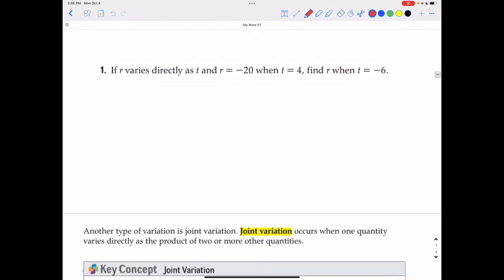Here's another example. If R varies directly as T and R is negative 20 when T is 4, find R when T is negative 6. I'm going to put the R over the T. You can put T over R if you would like. It doesn't matter because you're still going to cross-multiply the same numbers. Just make sure you remain consistent so that both of the R's are on either the top or the bottom of the fractions.